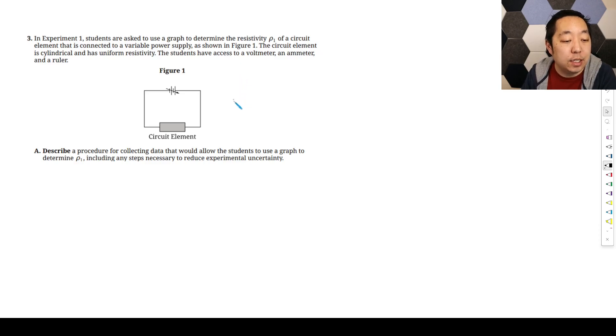Describe a procedure for collecting data that will allow the students to use a graph to determine ρ₁, including any steps necessary to reduce experimental uncertainty. This one's mostly straightforward. We're going to use V equals IR, and the resistance is ρL over A. If you look at the relation, we're going to measure the voltage and current, and look at that ratio. We want to plot something, so voltage is going to be I times ρL over A. If you think about this as your Y variable and this as your X variable, then this whole thing is your slope.